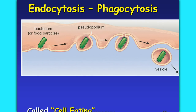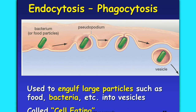Then there's phagocytosis. If pinocytosis — like piña colada — is cell drinking, phagocytosis is cell eating. It's used to engulf large particles like food or even bacteria into vesicles — anything that's a solid, really. The 'phago' sound in phagocytosis is like the 'f' sound in food, so phago means food. Pinocytosis is cell drinking; phagocytosis is cell eating.